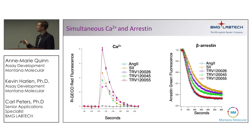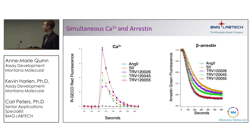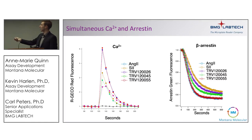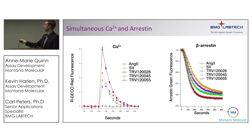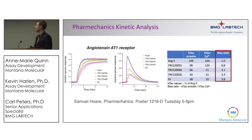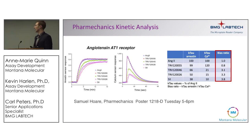We can now compare both the calcium response and the arrestin response for each compound. Angiotensin II and Trevena 55 are our balanced agonists with strong activation of both pathways. Trevena 45 has a decent arrestin response but a limited calcium response — an intermediate compound. What we needed was a way to quantify this bias, so we turned to Samuel Hoare from Pharmacanex to help figure out the best way to take advantage of this kinetic data to calculate a simple bias ratio.